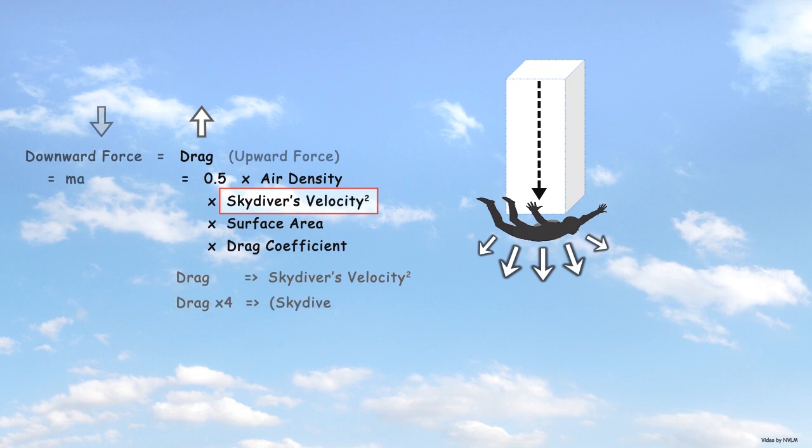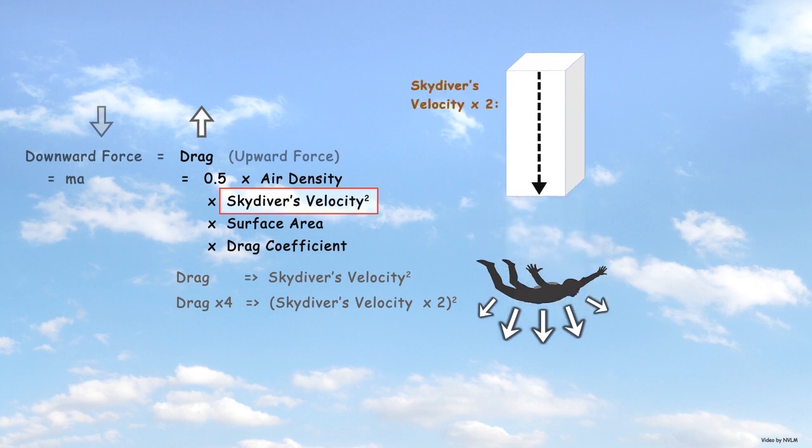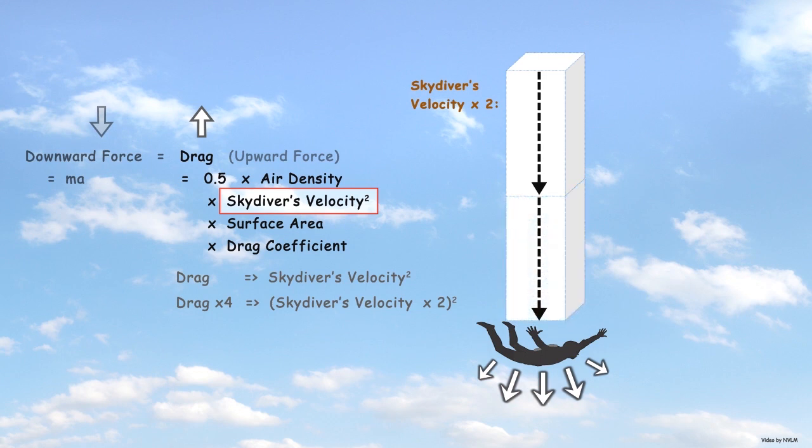For example, if the skydiver's velocity doubles, then drag quadruples. This is explained in two parts. Firstly, as velocity has doubled, the skydiver falls through twice the mass of air as before each second.